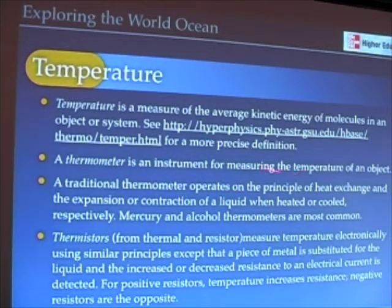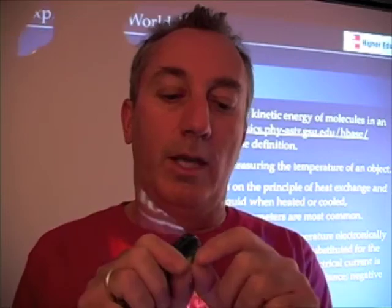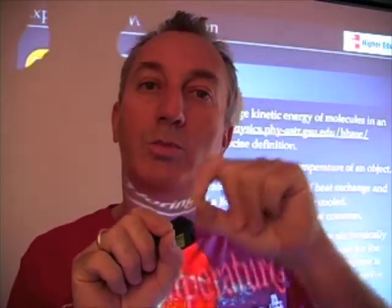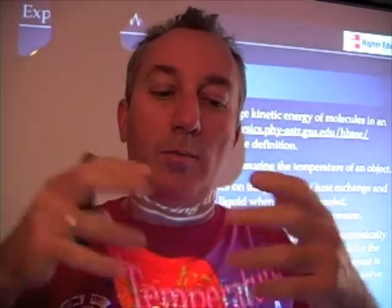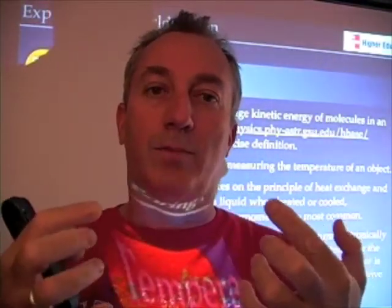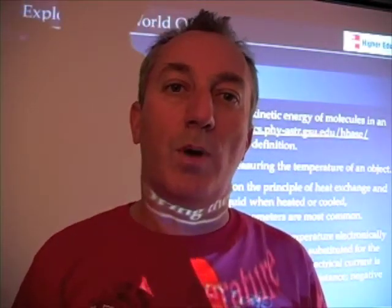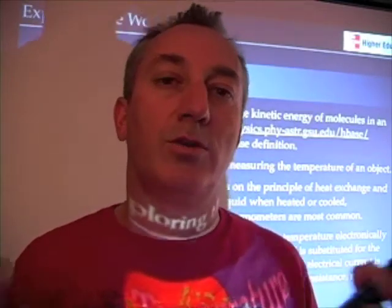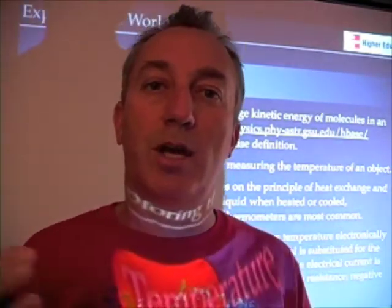A thermometer is an instrument for measuring the temperature of an object. The traditional thermometer — the mercury thermometer — has a column of mercury or alcohol rising in a tube. As the temperature goes up, the kinetic energy of the air molecules beats on the end of the thermometer and they exchange energy, causing an expansion of that liquid. Same thing with cooler temperatures: the mercury or alcohol thermometer releases heat to the surroundings, causing contraction of the liquid inside the thermometer.